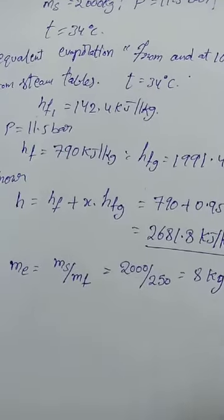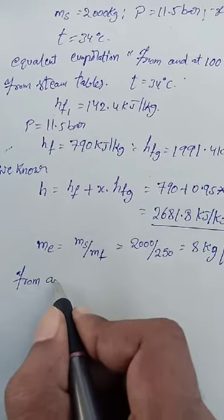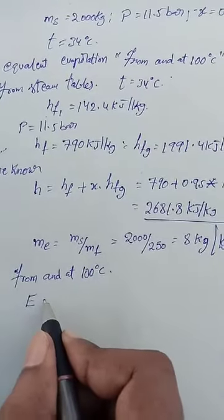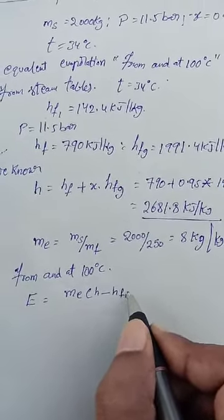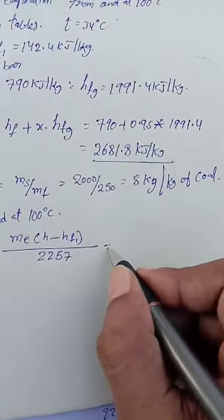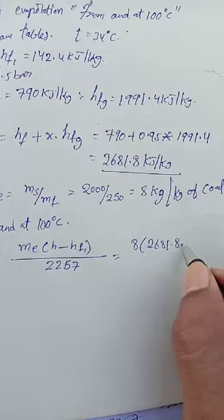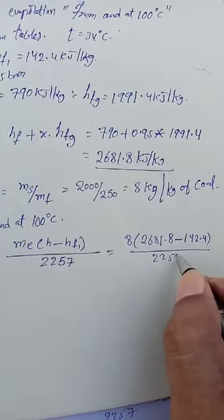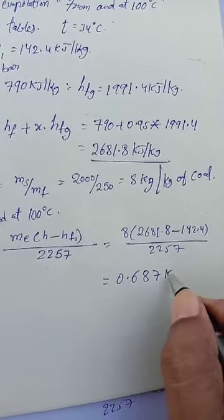Now we go for the equivalent evaporation from and at 100 degrees Celsius. The formula is: equivalent evaporation E = Me × (H − HF1) divided by 2257. Now substituting all values and calculating, we get the equivalent evaporation in kilojoules per kg.